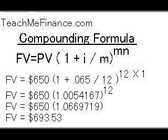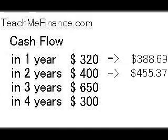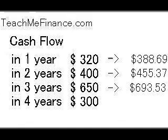Next is the third payment, which was for $650. Again, it's monthly, so M is 12, and the number of years is 1. So it's 1.0054167 to the power of 12, which comes out to 1.0669719. You multiply that by $650, and it comes out to $693.53, which means that three years from today you're going to receive a payment for $650, and that payment will have one year to earn interest at 6.5% compounded monthly, growing to $693.53 four years from today.